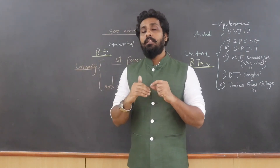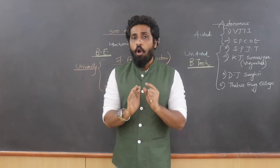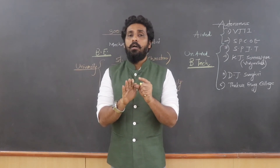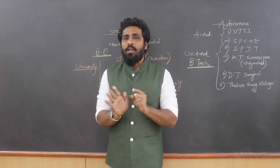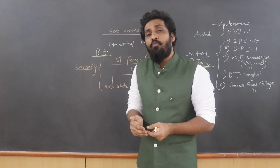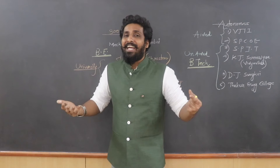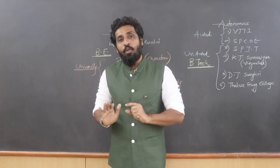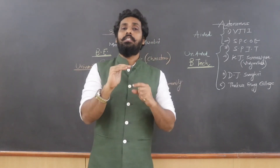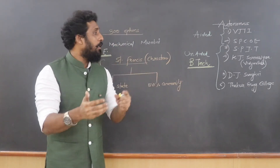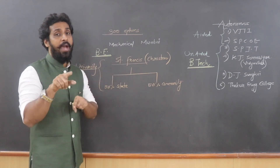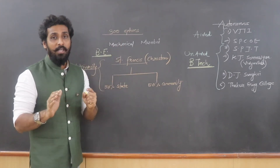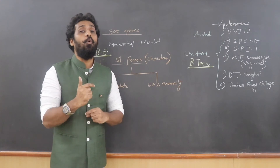Once the option form is submitted and college preferences are selected, the next step is allotment. You don't have to go anywhere — everything happens online. To recap: Step 1 is registration, Step 2 is the merit list, Step 3 is filling the option form in CAP Round 1. Now let's understand how allotment works.